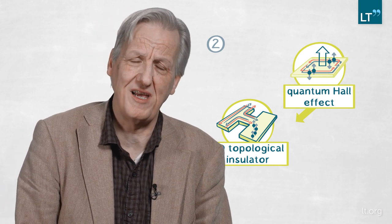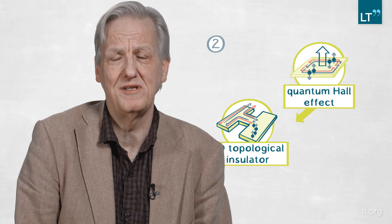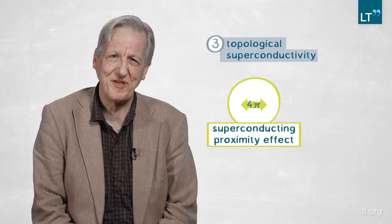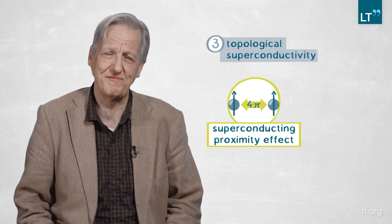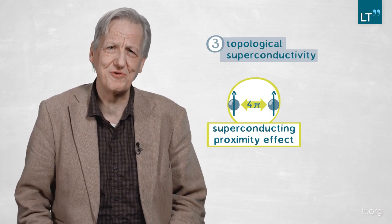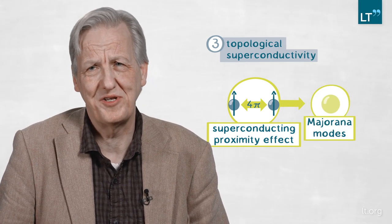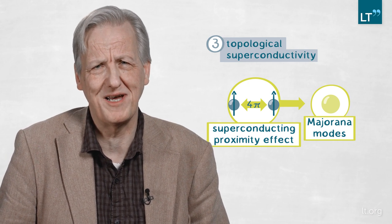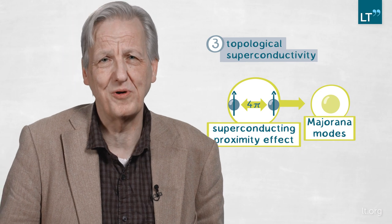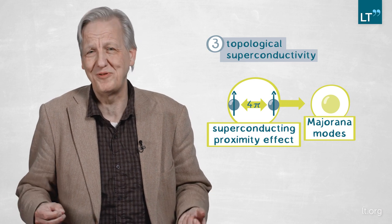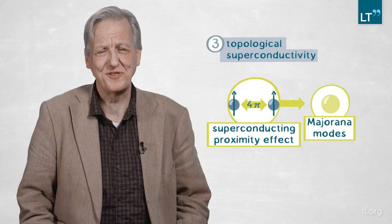This was possible because of the high crystalline quality of our materials. More recently, we have been looking at topological superconductivity. There we found a so-called four-pi dependence of the superconducting proximity effect on the phase difference between the superconducting electrodes in these devices. That's a pretty sure sign that you have what some people call Majorana modes in your material — modes that give rise to Majorana bound states at zero energy if you can localize them. So they're a sign that you have topological superconductivity going on, and that in principle you could use it for topological quantum computing.